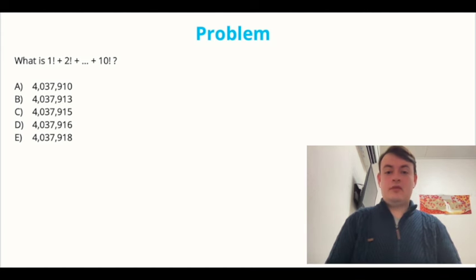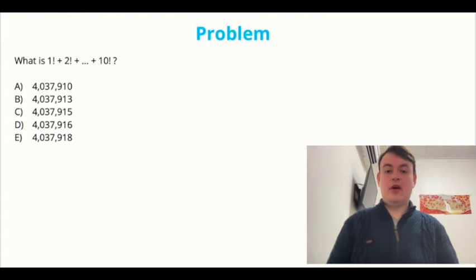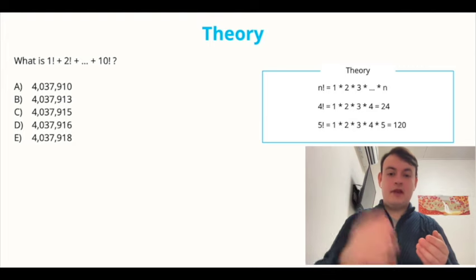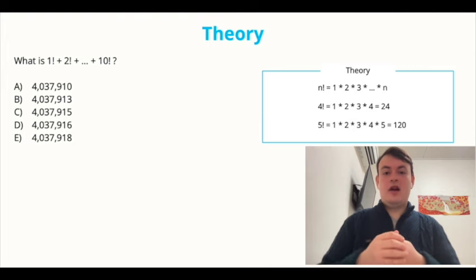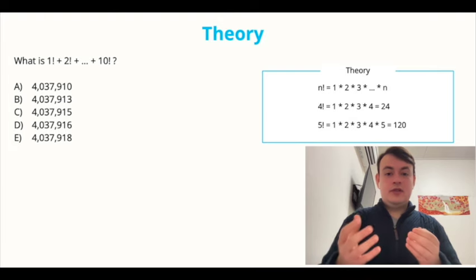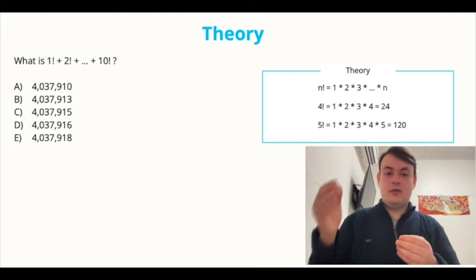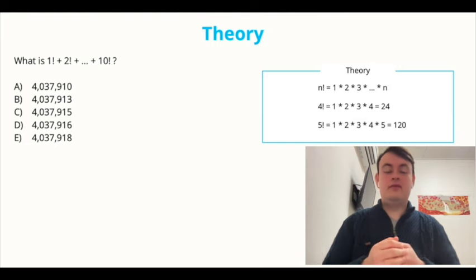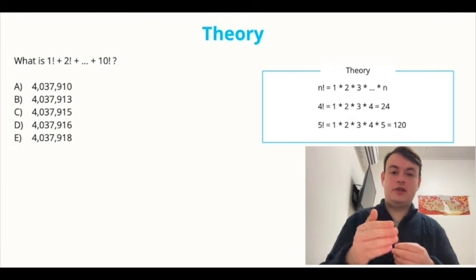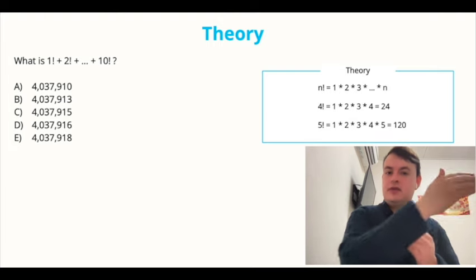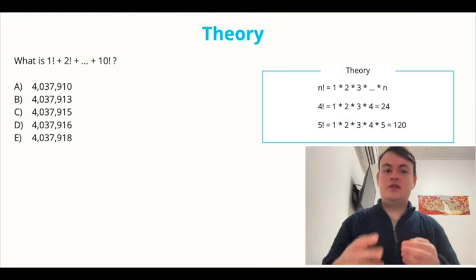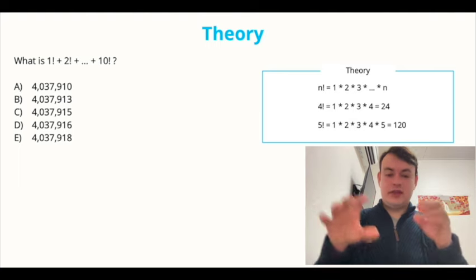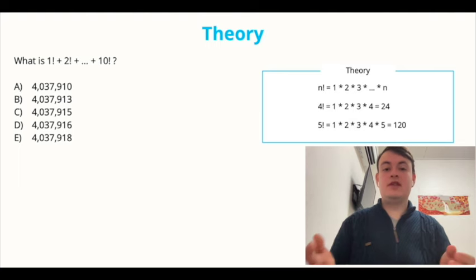First things first, let's freshen up our memory on factorials or this weird exclamation marks at the end of each number in the question. So a factorial is used to denote a product of all numbers from 1 to n. I'll give you an example. 5 factorial equals to 1 times 2 times 3 times 4 times 5, which will give us 120. And now that we are completely sure that we understand the problem, we can start solving it.